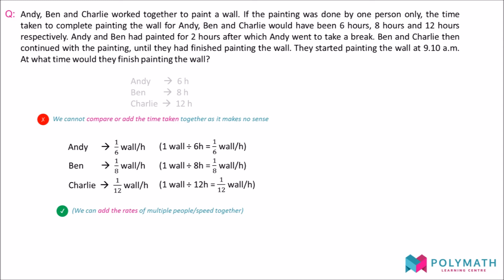Moving on, we were told that Andy and Ben first work together on the wall for 2 hours. Therefore, we add up both of their productivity to get 7 over 24 wall per hour. Since they work together for 2 hours, we take their combined rates and multiply it by 2 hours and find that they have painted 7 over 12 of the wall in 2 hours, leaving 5 over 12 of the wall that was left unpainted.